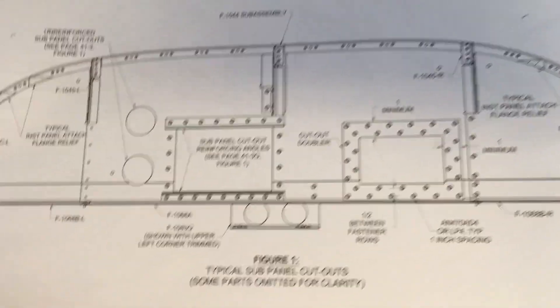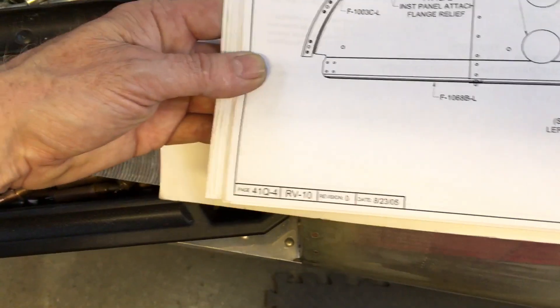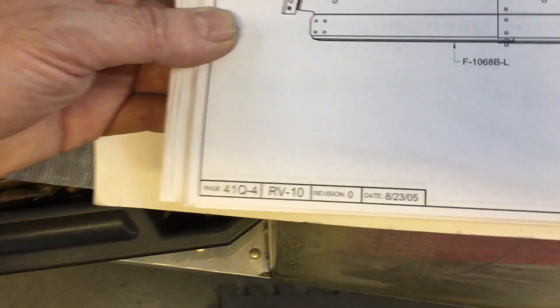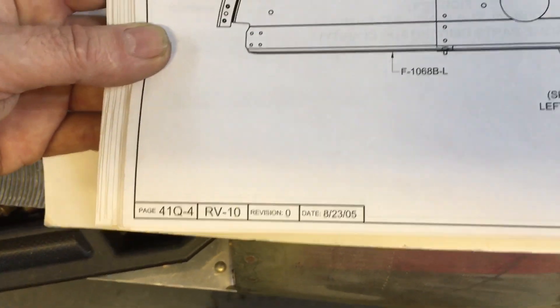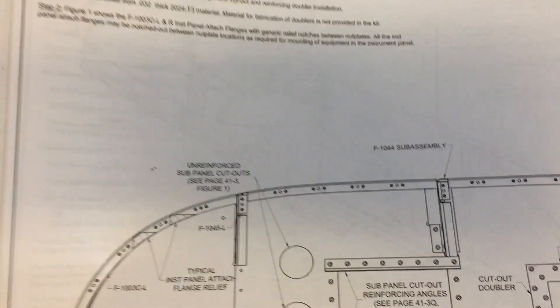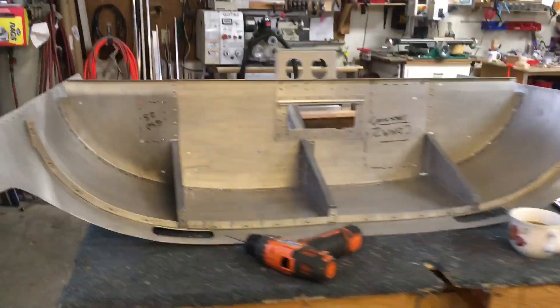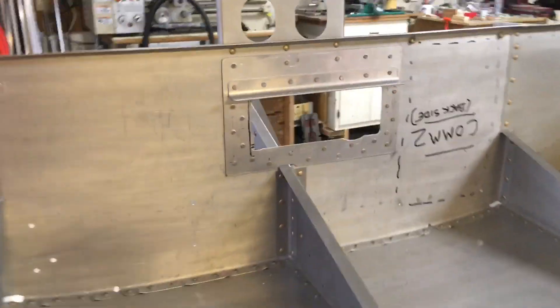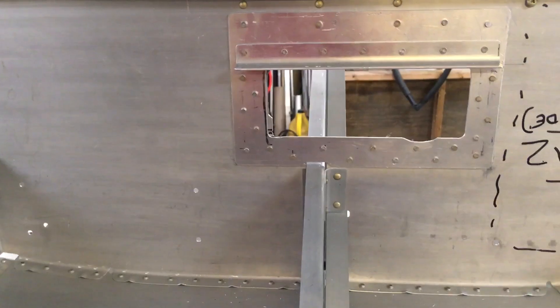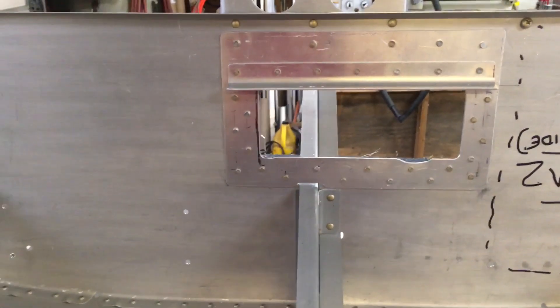This is one of the pages out of the plans, page 41Q-4 for the RV-10. There's a couple of pages that talk quite a bit about how to do doublers based on the size of the cutouts that you make. You have to usually make a cutout in the sub-panel because of the length of the radio stack, and that's the way mine is with the Garmin 650.